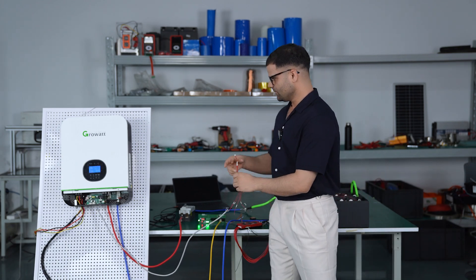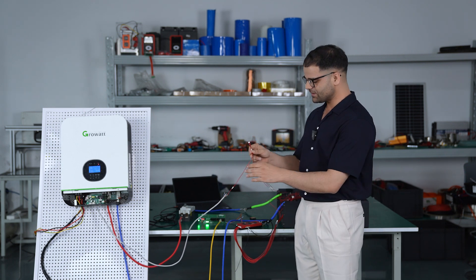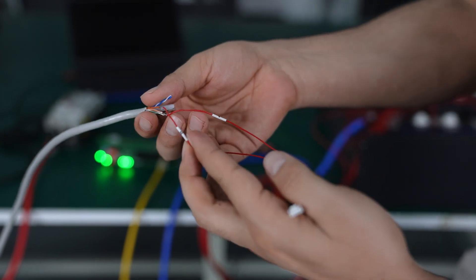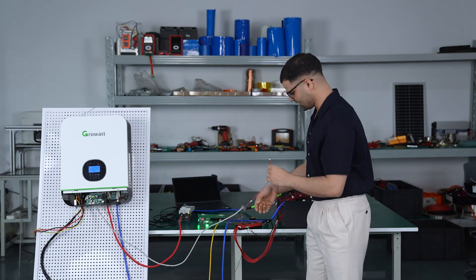Today we are connecting the inverter to the BMS directly through an RS485 cable. You need to make sure you are connecting the RS485 A and B cables correctly to the BMS. We have connected it correctly, so now we will connect it to the BMS.